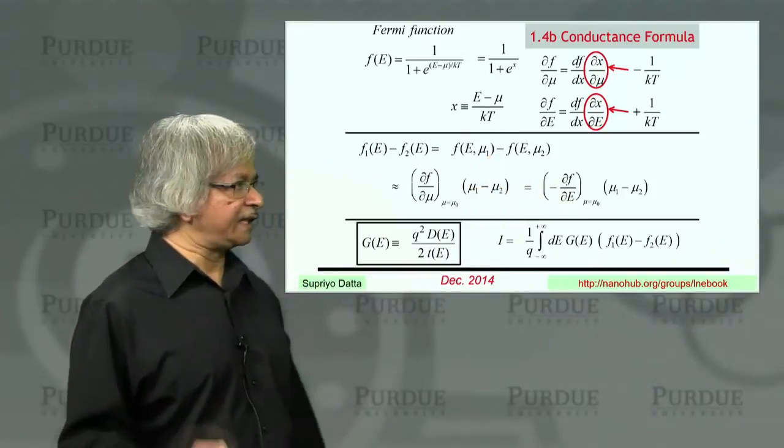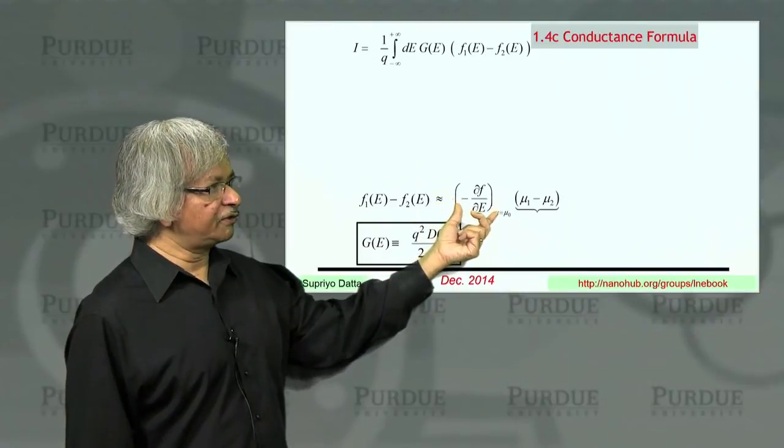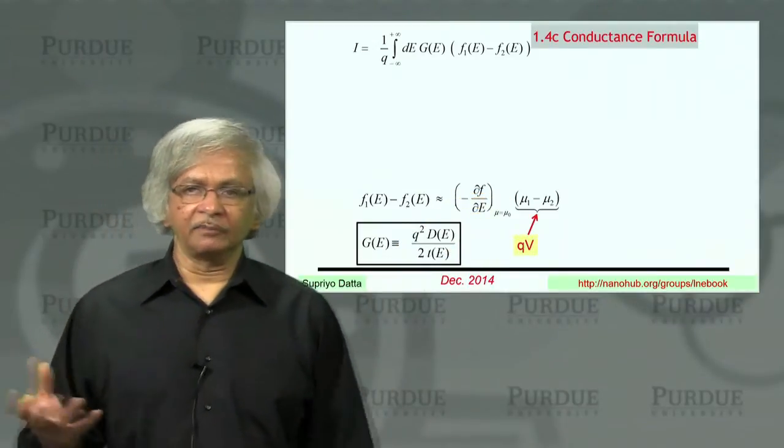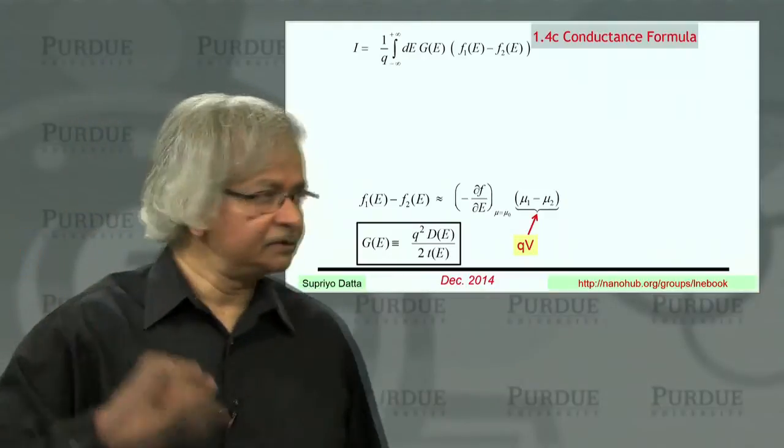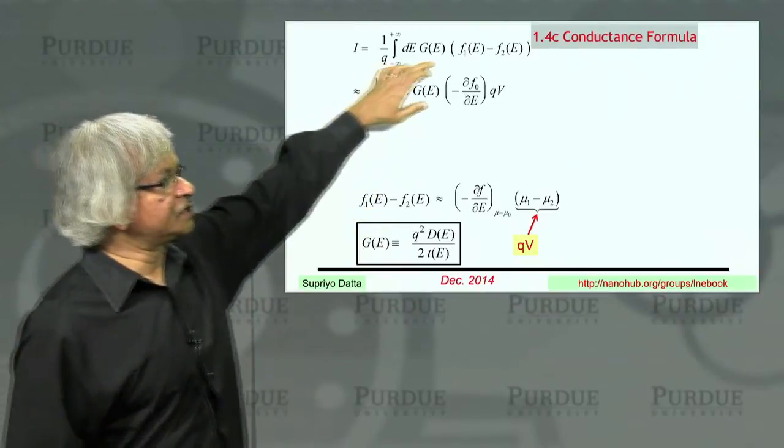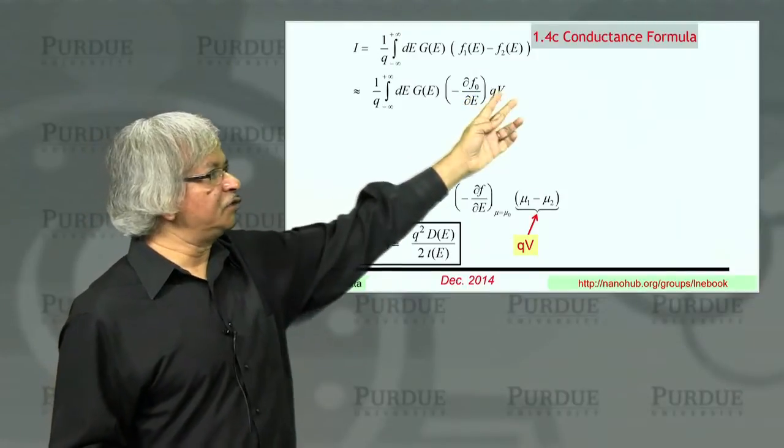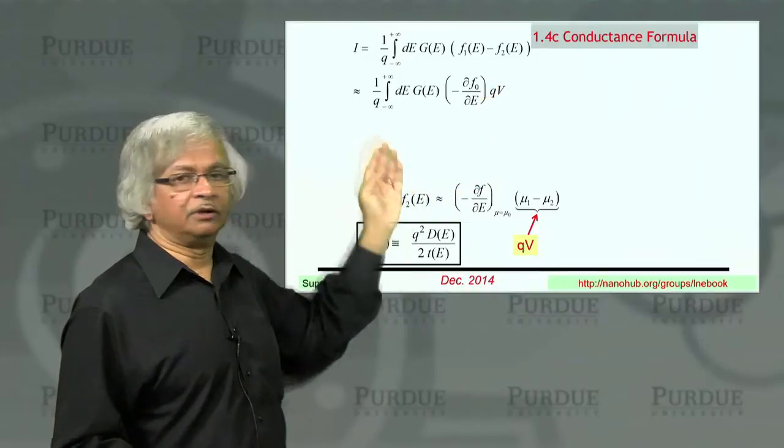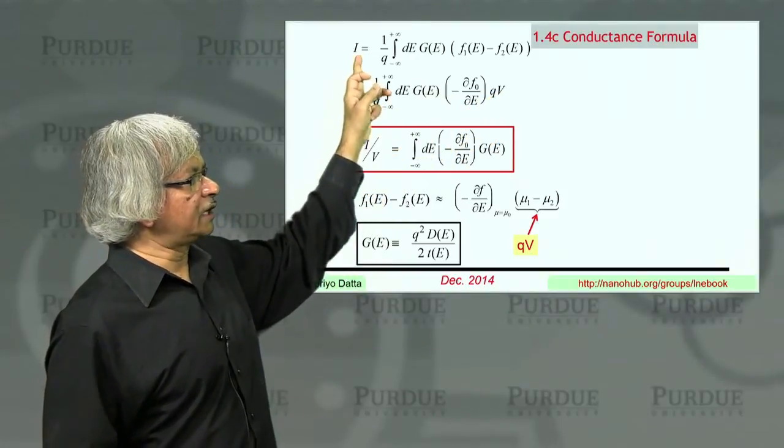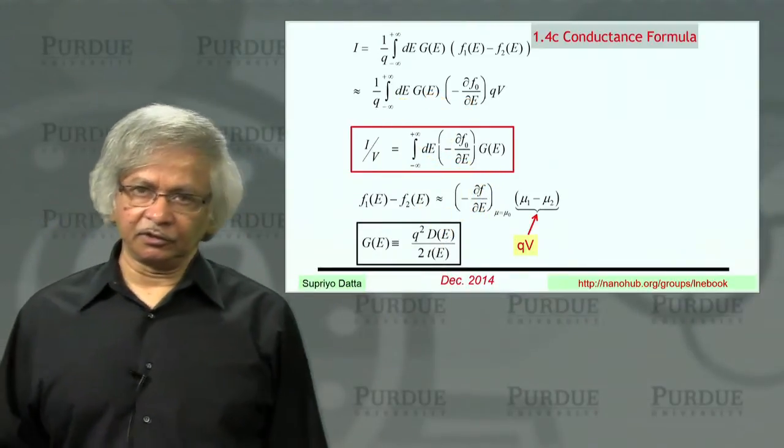So with this result, let's carry on. We have written f1 minus f2 as the partial of f with respect to energy times μ1 minus μ2. And we note that the difference between the two electrochemical potentials is the applied voltage, qV. So we put that in. We now use this result and go back to our original expression. So instead of f1 minus f2, we put in this partial times qV. And the qV is a constant, independent of energy, so it can be pulled out. You see the q cancels this q, and so current divided by voltage, you could write as this quantity. So that's this conductance formula that we were talking about.